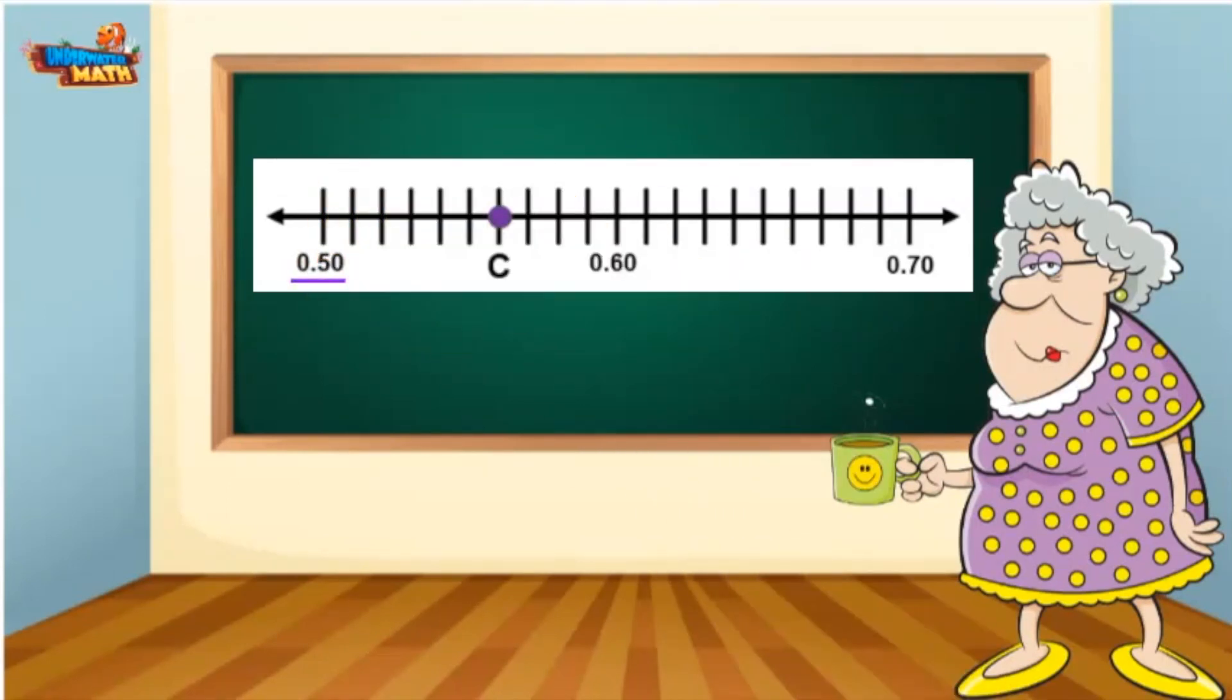Here we go: 50 hundredths, 51, 52, 53, 54, 55, 56 hundredths. And there we are, point C represents 56 hundredths.